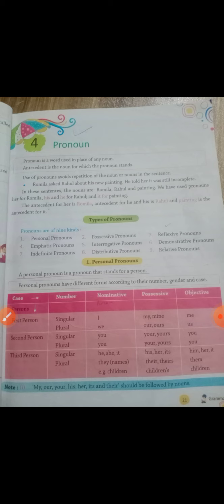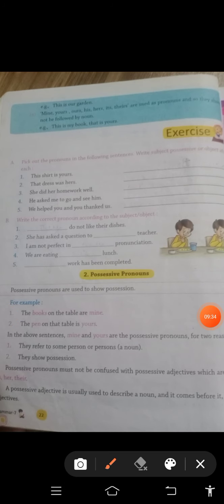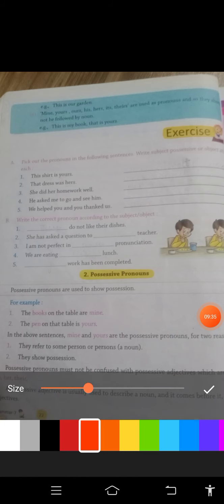My, our, your, his, her, and their should be followed by nouns. For example: 'This is our garden.' Here the use of 'our' is as a possessive adjective followed by noun 'garden'.